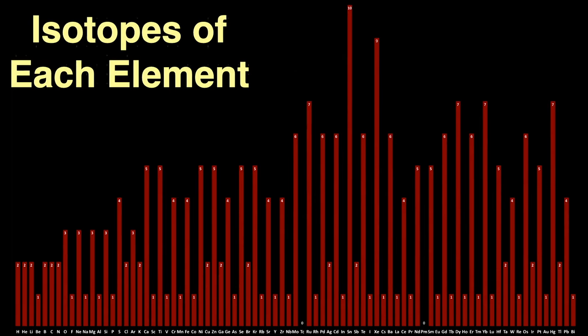I apologize for the tiny element symbols and numbers, but it's hard to fit in 82 stable elements in a single slide. Although 10 has more stable isotopes, 10, xenon has the second most stable isotopes at 9.